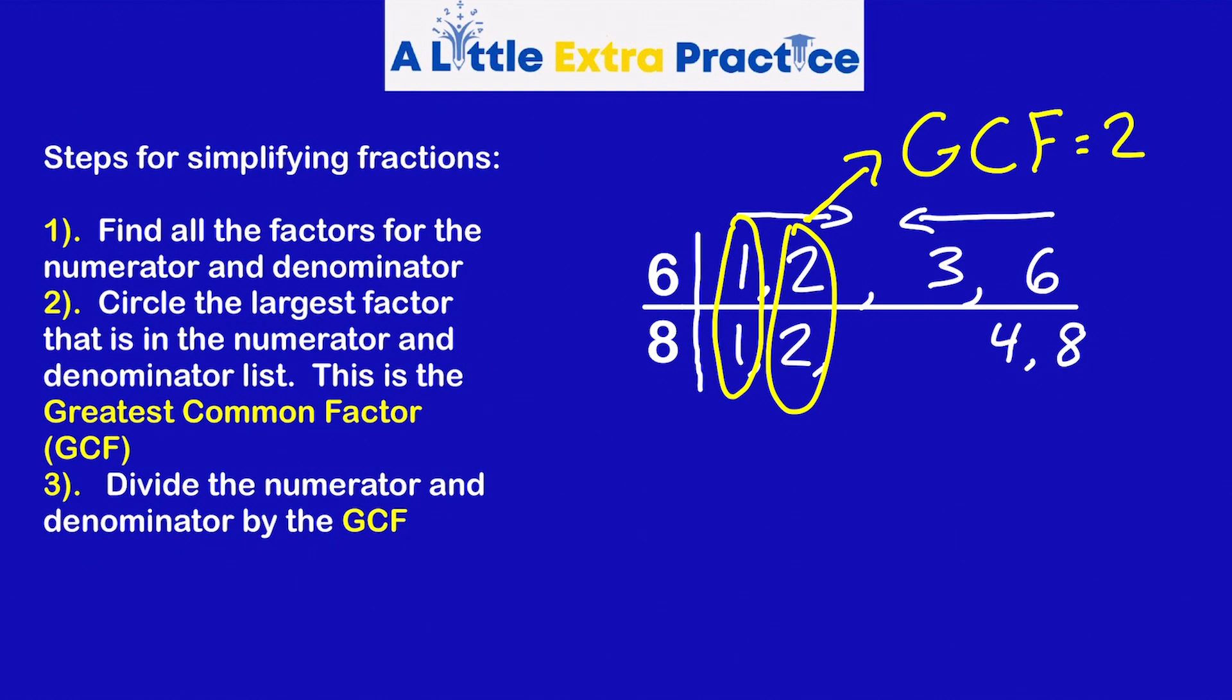Step number three: Divide the numerator and denominator by the GCF. So we have six out of eight. Divide the numerator, that's six. Divide the denominator, that is eight. Six divided by two is three. Eight divided by two is four. So six out of eight, six-eighths simplifies to three-fourths. Let's try a couple more.